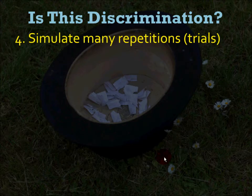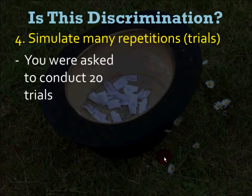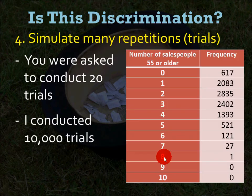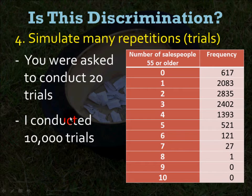Fourth, simulate many repetitions and trials. In class, I had hoped that you each conducted 20 trials in your calculator and wrote down how many times out of those 20 you got six or more layoffs of older people. I did 10,000 trials myself using a program. The results were: 6, 17, 0, 2083, 1, and so on. 10,000 trials gives you a more reliable percentage than merely 20 — the more trials you have, the better your percentage should be.